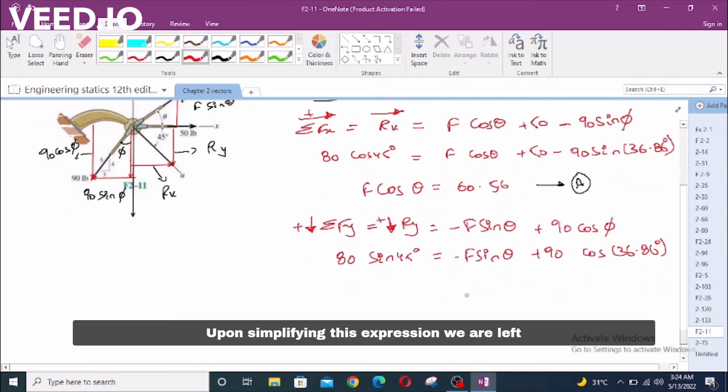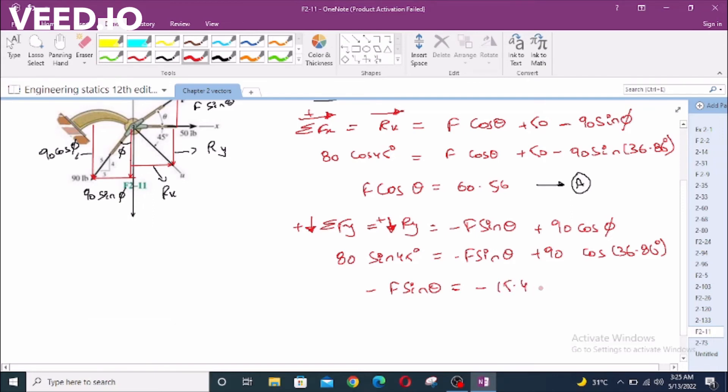Upon simplifying this expression we are left with F sin theta equals negative 15.4. Let's call this equation B.